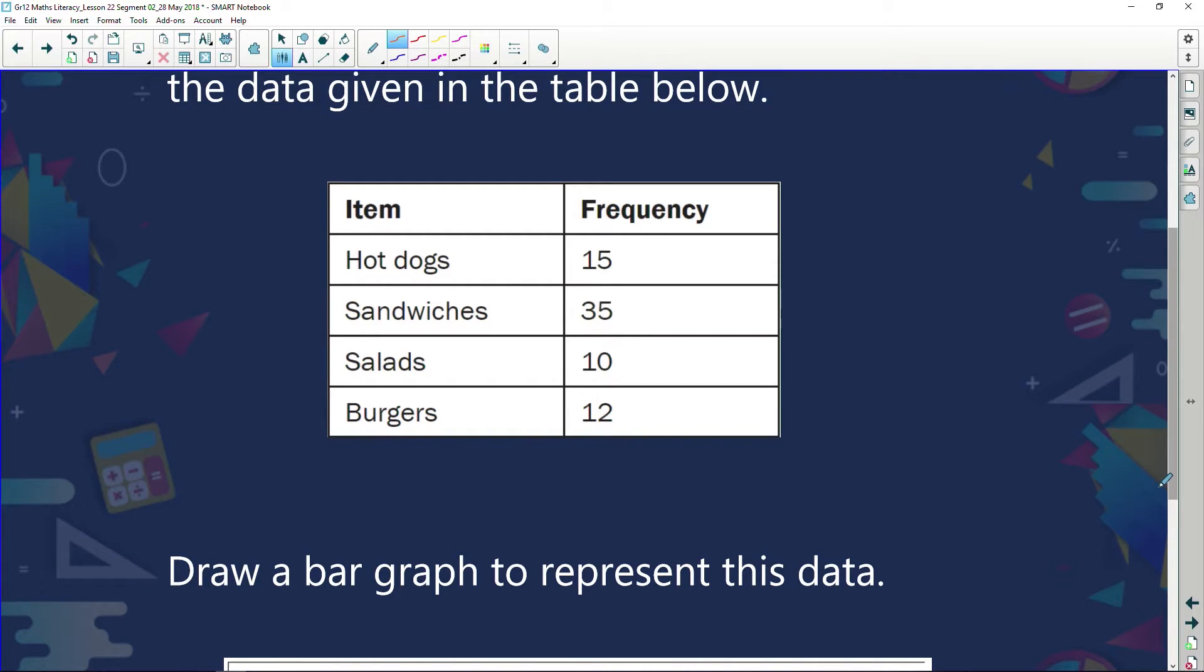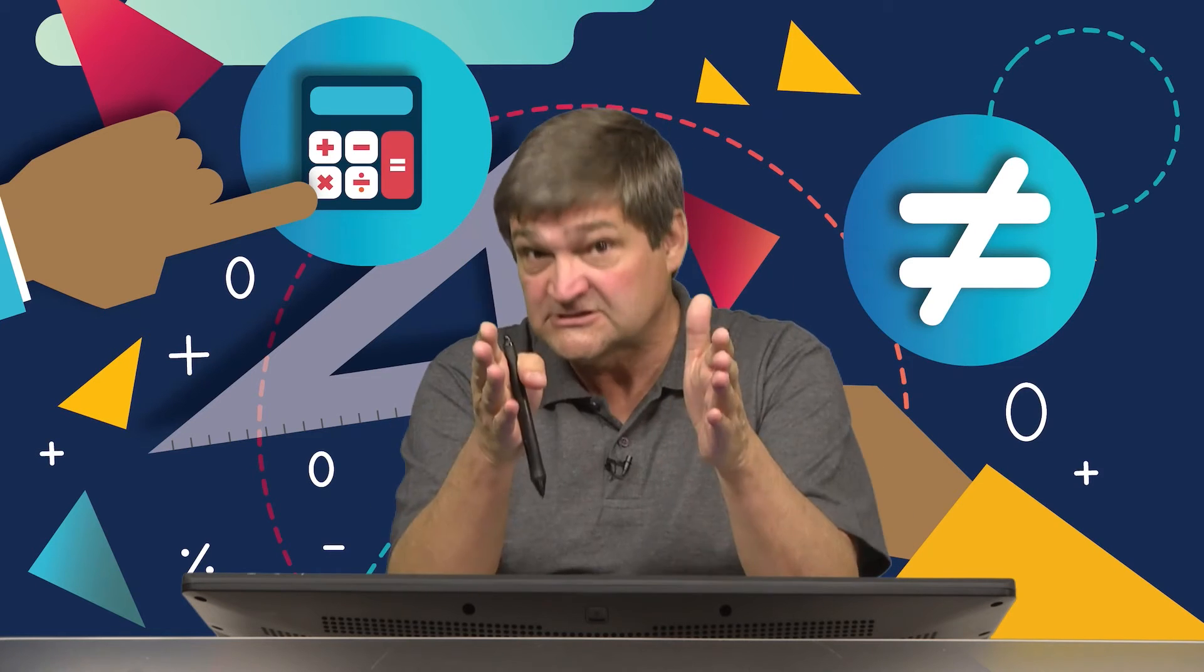So draw a bar graph to represent this data. Now, the first thing we've got to understand is this. We're drawing a bar graph. How do I know? Because the question tells me. But second of all, I also know that because a hot dog and a sandwich are two entirely different things. A sandwich and a salad is two entirely different things. A salad and a burger are two entirely different things. I'd rather eat a burger than a salad. My wife mustn't hear me say that, of course. But that is the truth. So if I said, salad, burger, it's the same thing. No, it's not. It's two entirely different things. So I'm going to have different categories. Single bars.